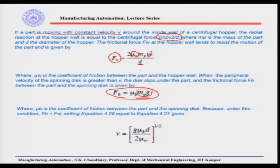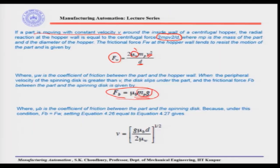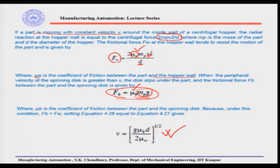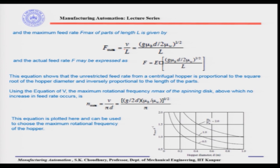Forces Fw and Fb act on the same part. The difference is that the material of the spinning disk and the material of the wall may differ, hence μw and μb respectively. Setting Fb equal to Fw and solving gives the critical velocity V = √(g·μb·d / 2μw), where d is the hopper diameter. The maximum feed rate is then F_max = V / L, where L is the length of the part.